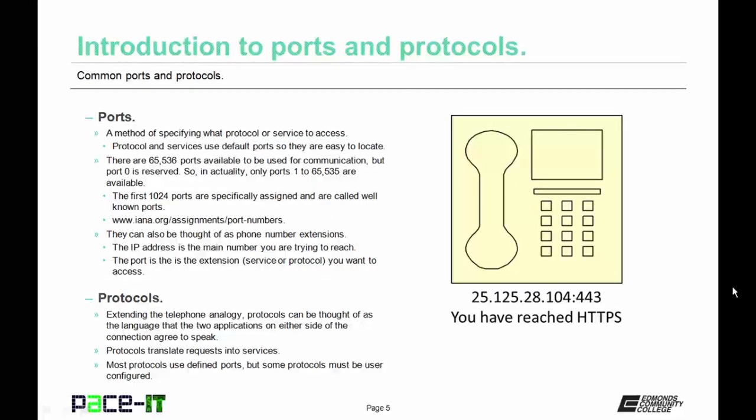Let's start with ports. Ports are a method of specifying what protocol or service to access. Protocols and services usually use default ports so that they are easy to locate. There are 65,536 individual ports available for communication. Port 0 is reserved, so in actuality only ports 1 through 65,535 are available. The first 1,024 ports are specifically assigned to protocols and services and these are called well-known ports.